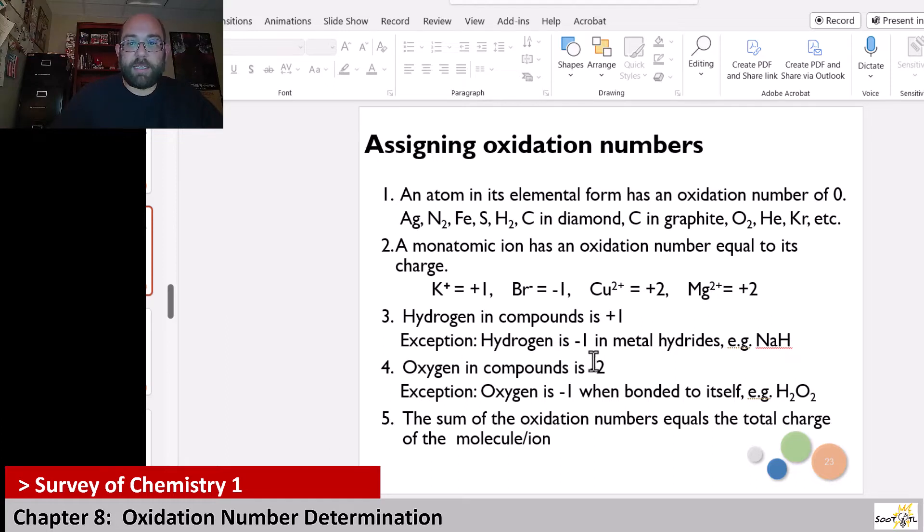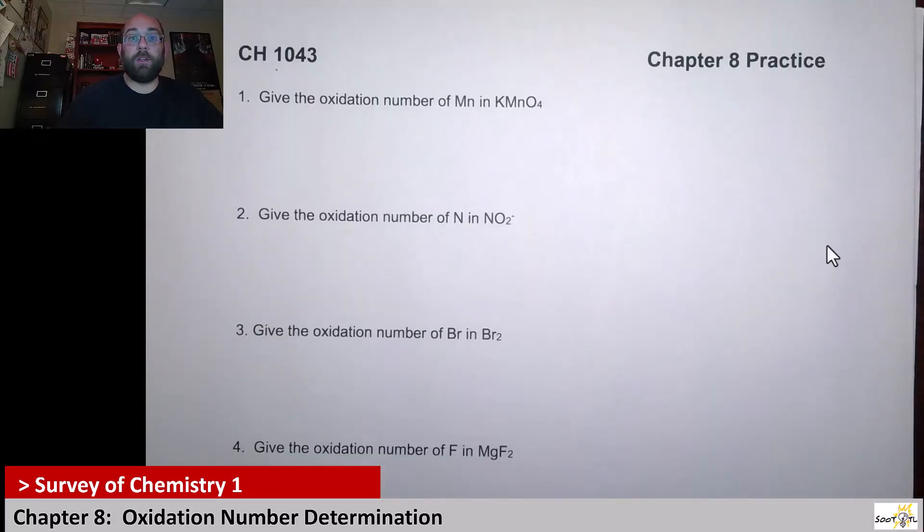Oxygen tends to be negative two, except when you see some type of peroxide form. This is the most easily recognized peroxide, H2O2, but there are others. And then the sum of all oxidation numbers will equal the total charge on the molecule or the ion. So that's something we're really going to focus on here.